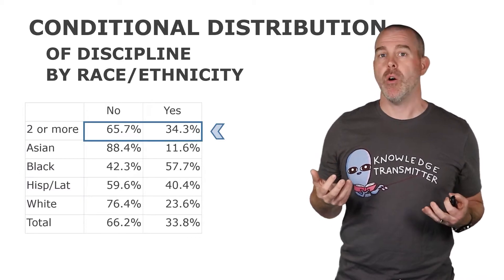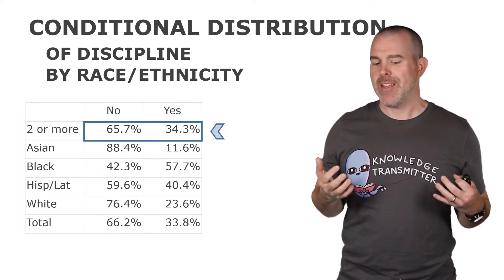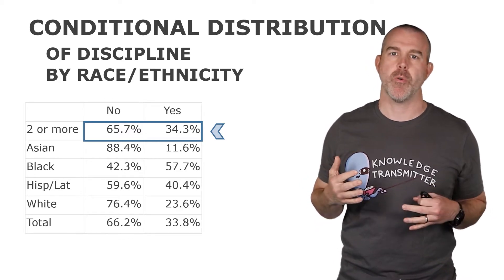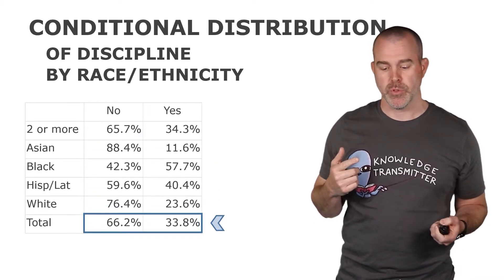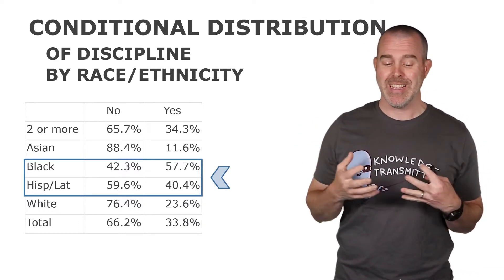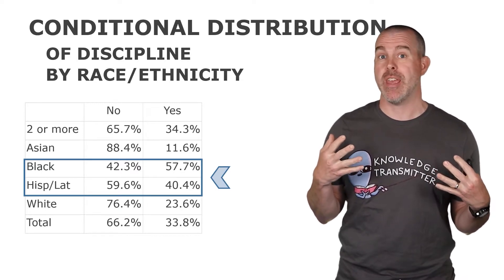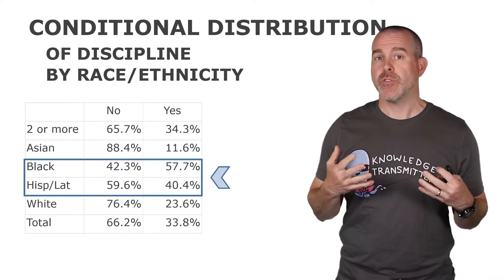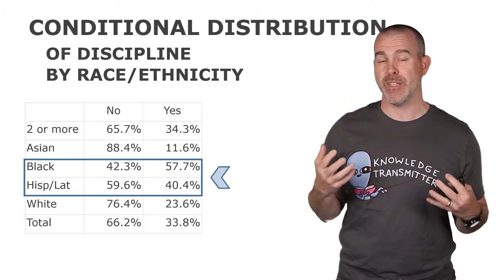If we look at the first row, this means that of students who have two or more races on their school application form, 65.7% had no discipline referrals that year, and the remaining 34.3% did have at least one referral. The same goes for all the other groups. What this table does is let you look at particular groups — in this case, the Black students and the Hispanic/Latinx students pop out as having much higher proportions receiving discipline compared to white or Asian students. That's what the conditional distribution does: it lets you look for differences between groups.